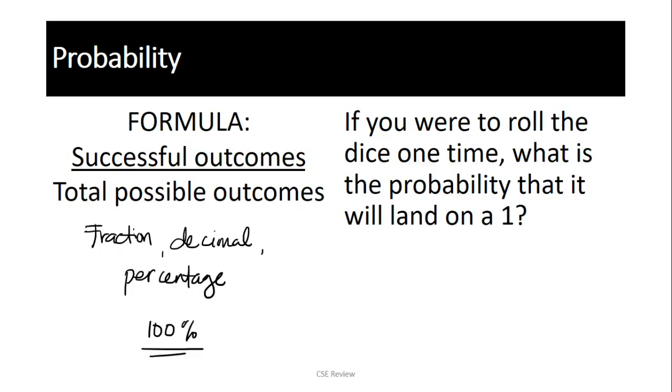Ang formula niya is the number of successful outcomes over the total possible outcomes. Basically, kung ilan ang papasa sa standard over kung ilan yung mga pinagpipilian. In this case, ang sabi, if you were to roll the dice one time, what is the probability that it will land on a 1? Ang tanong dito is this, ilan ang papasa sa standard? Ngayon, ang standard natin, it has to land on a 1. So, sa isang die, ilan ang 1? Diba isa lang naman? So, ang number sa taas becomes 1. Ngayon, ilan yung total possible outcomes? Ang tanong, ilan ang face ng isang die?